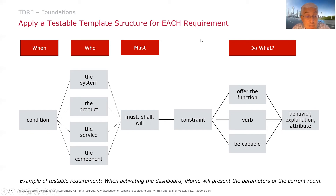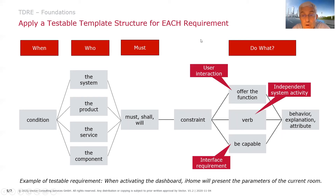An example of such a testable requirement is: when activating the dashboard, iHome will represent the same parameters of the current room. It is short, but it means the parameters of the current room are presented — and that is testable. This template applies not only to system requirements, but also to interfaces and user interaction, giving us a structure that helps in all typical cases.